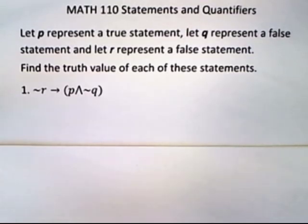This problem says let p represent a true statement, let q represent a false statement, and let r represent a false statement. Find the truth value of each of these statements.